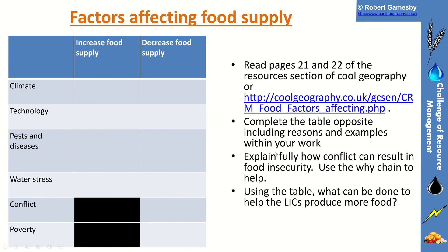You can also read the web page provided. The task is to explain fully how conflict can result in food insecurity. Then think about what can be done to help poorer countries produce more food — think about those problem areas and what we could do to improve them.